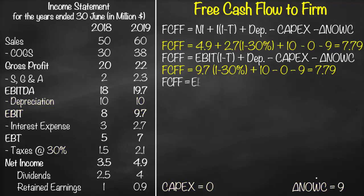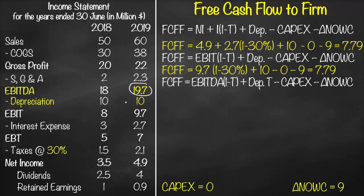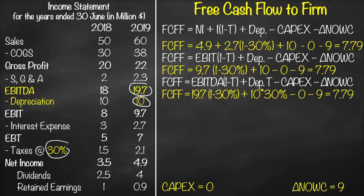A third formula is: FCFF = EBITDA × (1 − t) + Depreciation × Tax Rate − CapEx − Change in NOWC. From the income statement, EBITDA = 19.7, multiplied by (1 − 30%), plus depreciation of 10 multiplied by tax rate of 30%, minus CapEx of 0, minus change in NOWC of 9. This again gives free cash flow to firm of 7.79.